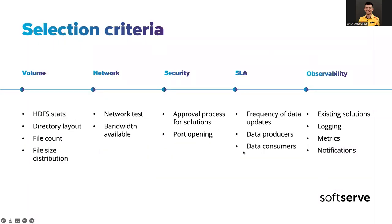Just to summarize what we just said: depending on different factors — I placed five here, you could probably have different ones for your project — you should select the right tool. We did migrate using DataSync. The biggest advantage of DataSync is that it's a managed service, it has nice integration with CloudWatch monitoring in the cloud, and it has event bus integration from CloudWatch so you can react to events. In a sense, it's easy to use, and it's also quite easy to use for business because there's a UI that's not complex to click through — you can do a quick POC just using the UI.